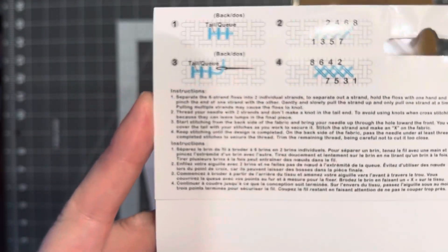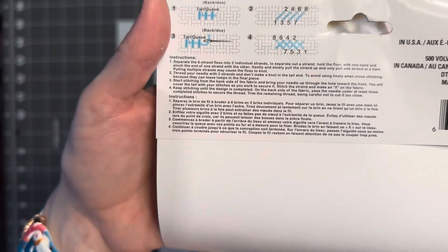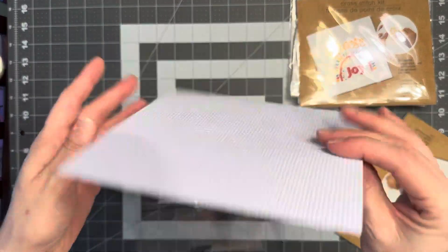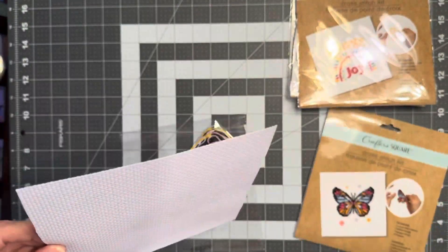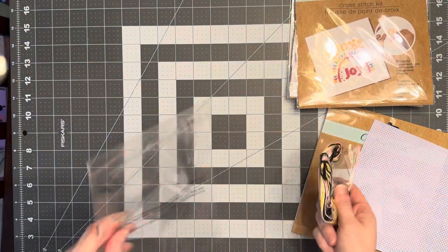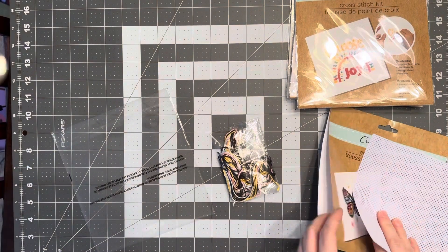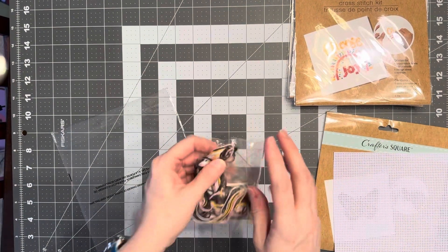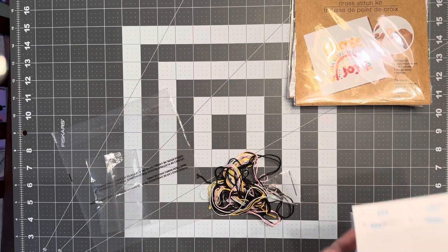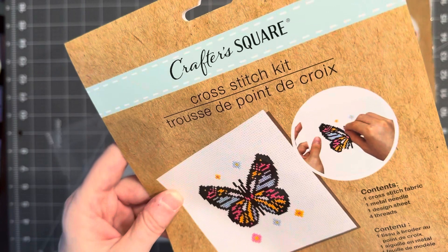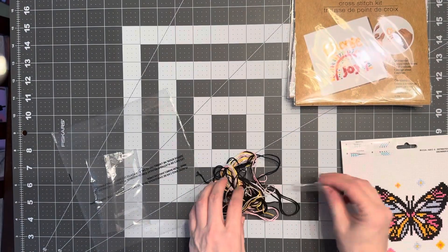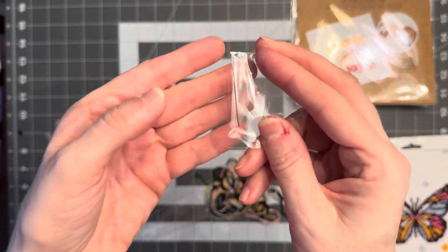And then on the back it does give instructions on how to back stitch. And it does come with instructions to read. I don't know if that's going to come out or not, so the glare. So it comes with the cross stitch fabric. Oh, the needle is in here, okay. Where is the, oh and on the back is the design sheet.